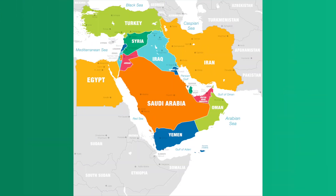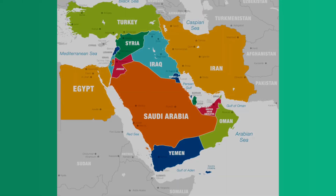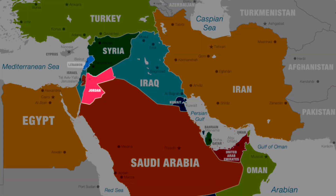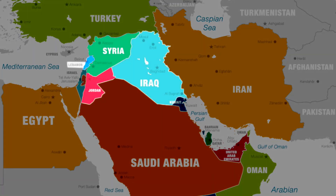The modern states we'll talk about today include Jordan, Lebanon, Syria, and Iraq. Are you familiar with any of these countries from other things you've studied or perhaps from current events? Throughout the lesson, consider how information plays into your perceptions and your understanding of this area.